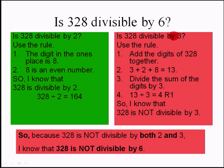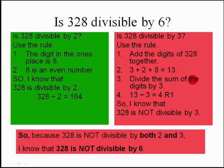But is 328 also divisible by 3? It has to be divisible by both 2 and 3. Use the rule: add the digits of 328 together. 3 plus 2 plus 8 is 13. Divide the sum of the digits by 3 — 13 divided by 3 leaves a remainder of 1. So I know that 328 is not divisible by 3.